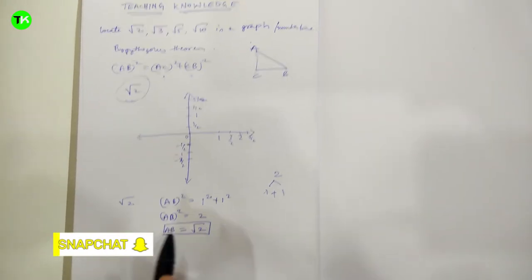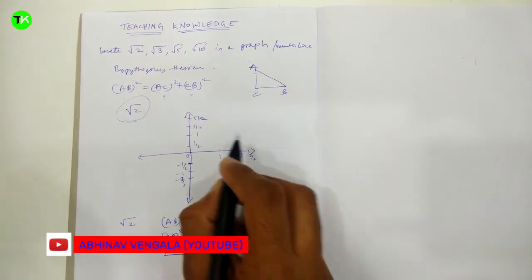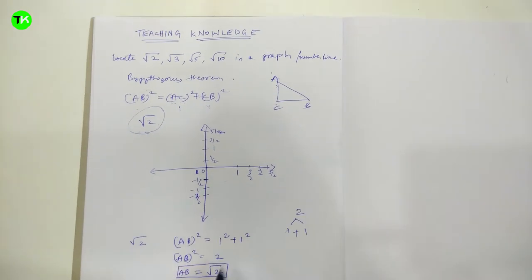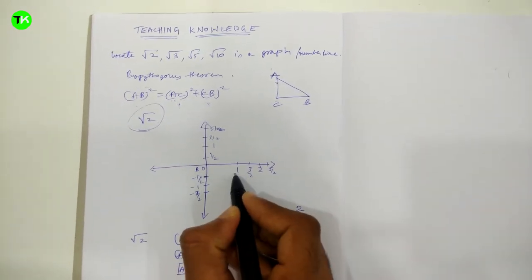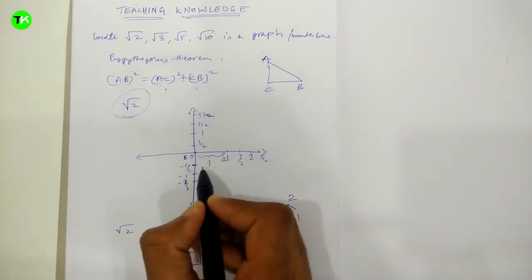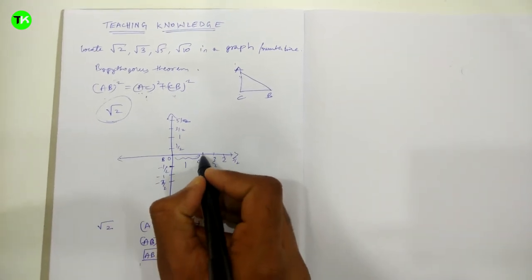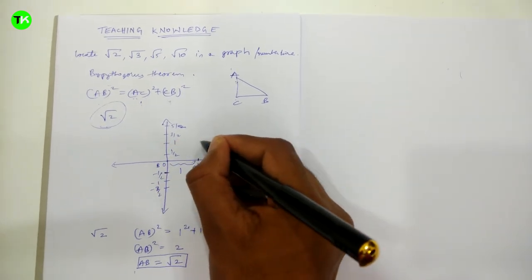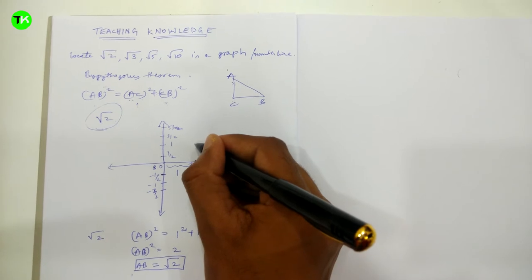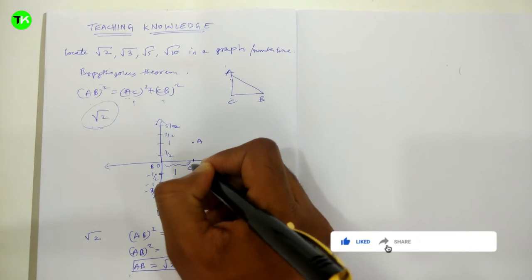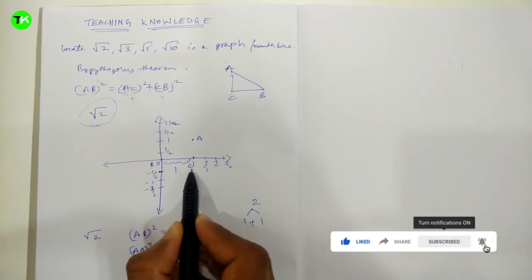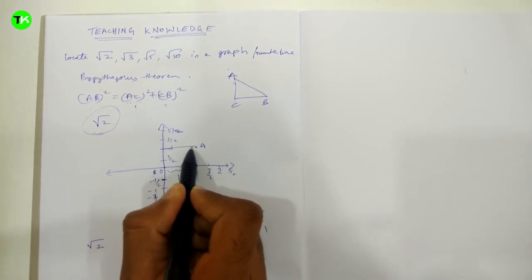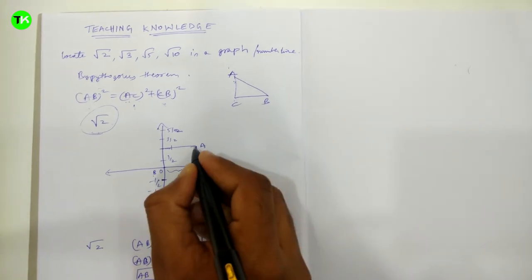To place √2 on the graph, we take the center as point B (the origin). CB = 1, so C is 1 unit along the x-axis. Then AC = 1, so point A is 1 unit up on the y-axis from C. The intersection of 1 unit on the y-axis and 1 unit from the x-axis gives us point A.